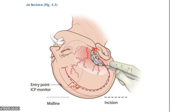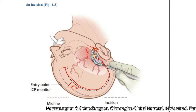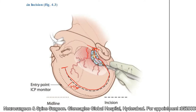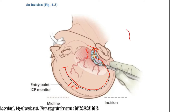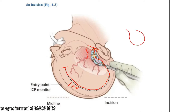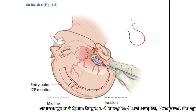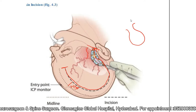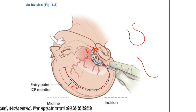The third consideration is what is the width of the flap. One important precaution: if the width of the flap is very much smaller compared to the length of the flap, that may compromise the vascularity of the flap and can interfere with healing. So we try to make the base of the flap as wide as possible.